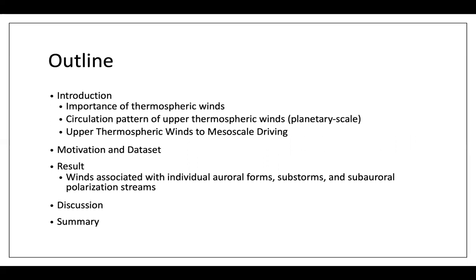A question then arises whether thermospheric winds respond to forcing at smaller, or mesoscale, scales. The answer is controversial. This controversy leads us to the motivation and the dataset. In the results section, I'm going to talk about winds associated with three mesoscale processes: individual aurora forms, substorms, and subauroral polarization streams — SAPS. We will then discuss the implications of the results and come to the summary.